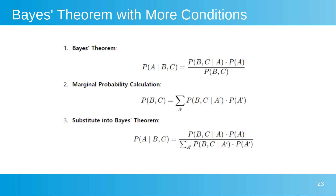Bayes' theorem with more conditions involves calculating the expected value given multiple conditions. For example, E(A|B,C) means finding the expected value of A when both conditions B and C are known. This extension goes beyond basic Bayes' theorem, which typically deals with only one condition. By incorporating multiple conditions, you can handle more complex scenarios and refine predictions.